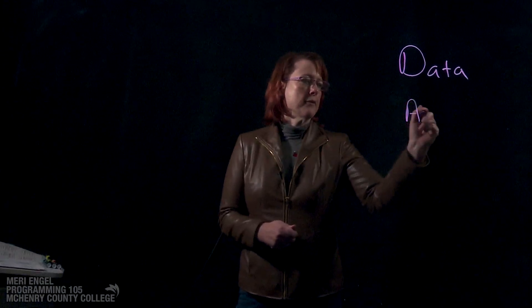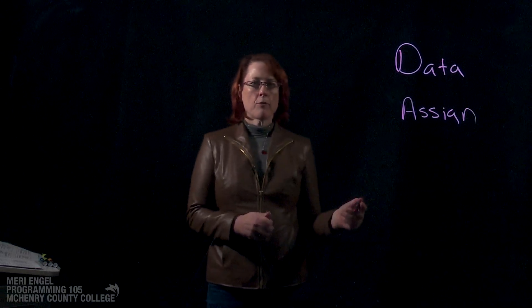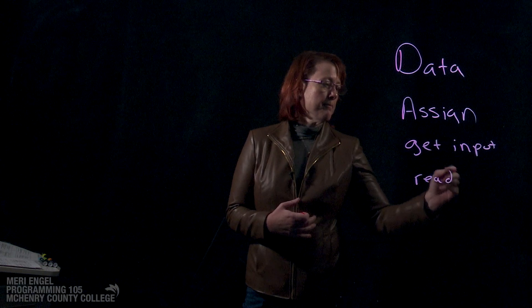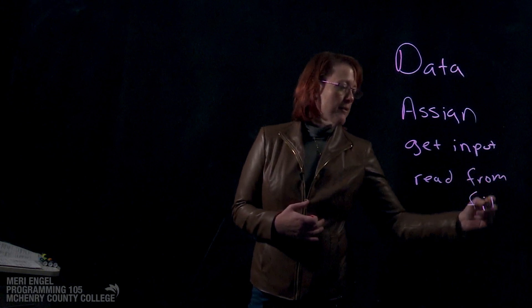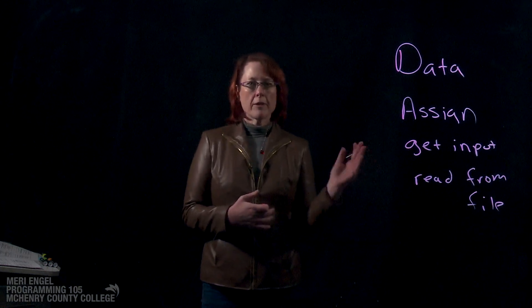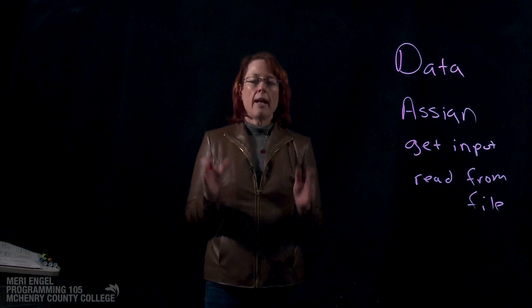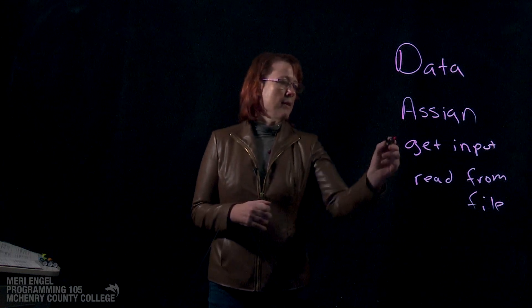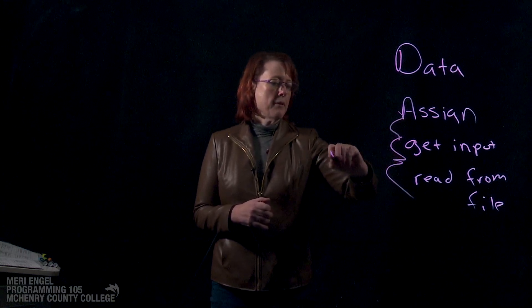Whenever you start writing a program or converting a problem into a program, there are three basic areas you work with. You're going to have some sort of data, and data can come from multiple places. In beginning programming, we will either simply assign values — things like pi = 3.14 — get input from the user, or read it from a file. Our very first program is going to be a Mad Libs-type program, where we take a poem or song, remove some words, and introduce variables.